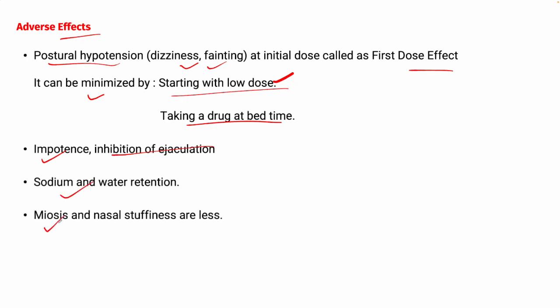Miosis — excessive contraction of the pupil — and nasal stuffiness are less commonly found adverse effects of prazosin.